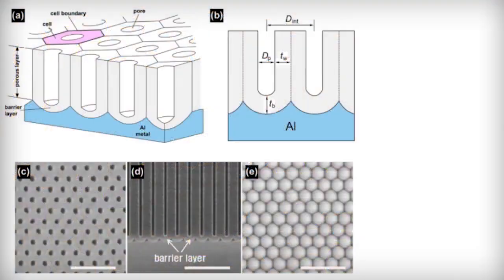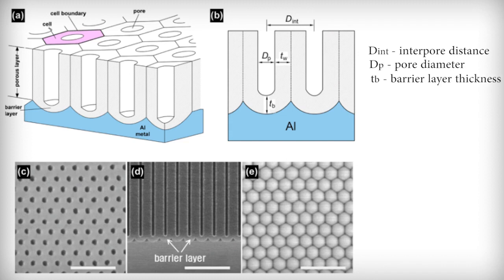In general, the structure of self-ordered porous anodic aluminum oxide is often defined by several structural parameters such as interpore distance, pore diameter, barrier layer thickness, pore wall thickness, pore density, and porosity.